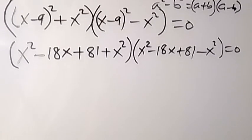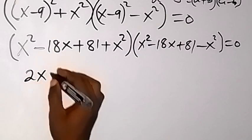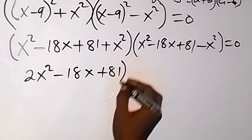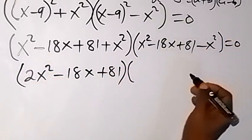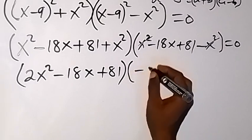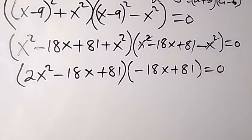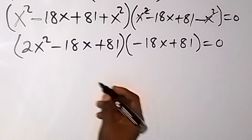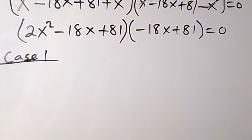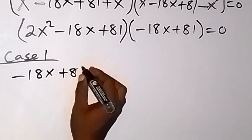We can reduce this further. The x squared terms give us 2x squared, then minus 18x plus 81. On the other bracket, x squared minus x squared cancel each other, so we have minus 18x plus 81 equals 0. We now have two cases. Case 1 is minus 18x plus 81 equals 0.